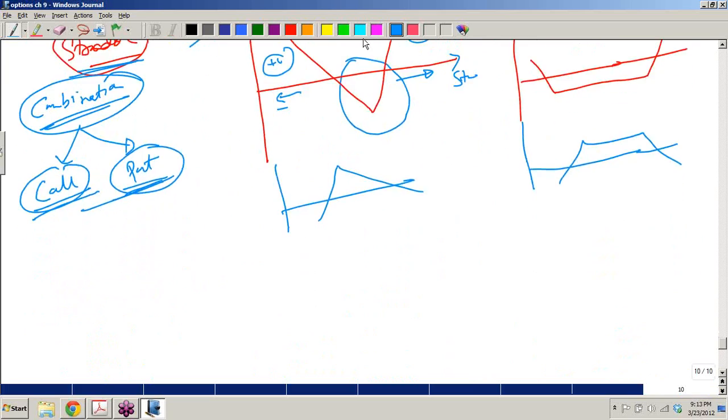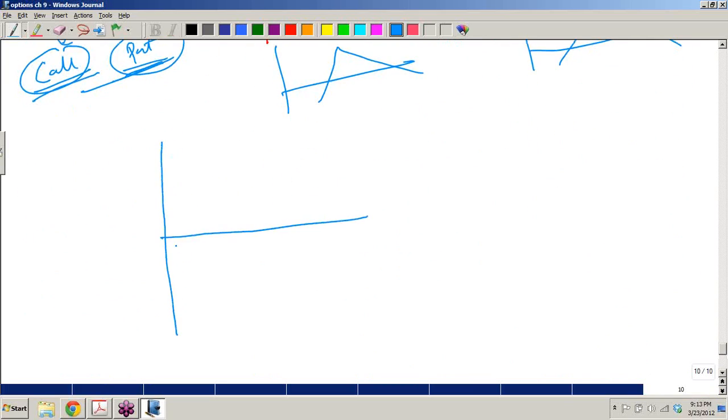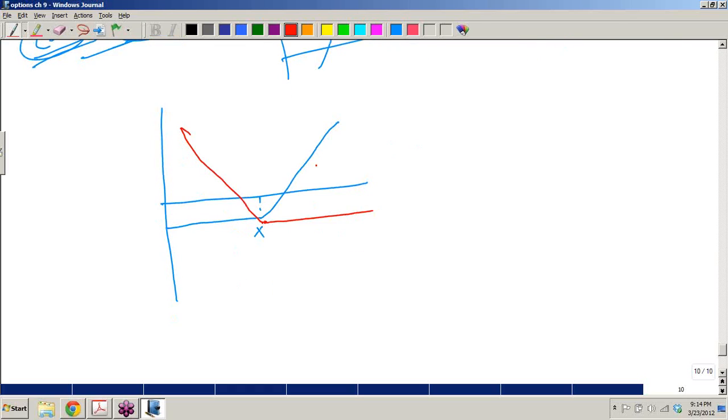So here if you see how do you create a straddle? What we do is, let's say you buy a call option for a strike price of X. For the same strike price, you buy a put option. For the same strike you are buying a put option. So what is happening is, if you see this plus this, it will give you the combined payoff.